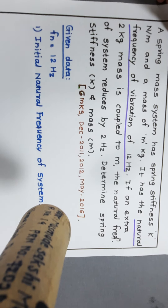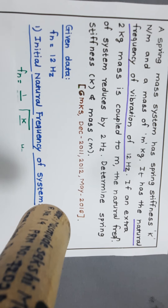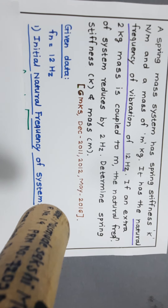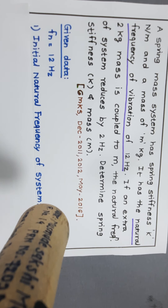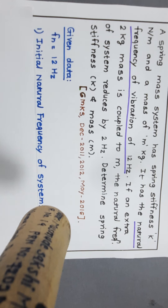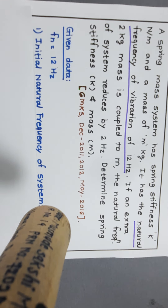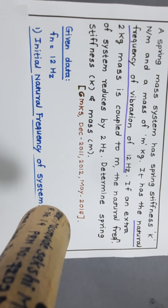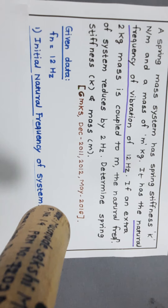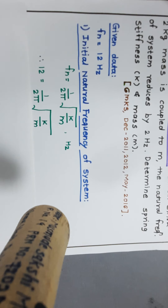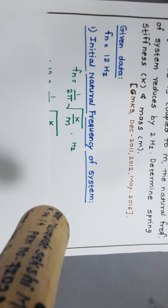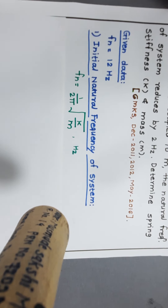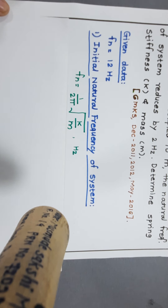This is the given data. The natural frequency is given as 12 Hz, and the reduced natural frequency will be 10 Hz when the 2 kg mass is coupled. For the first case, the initial natural frequency of the system is given by the formula: Fn = (1 / 2π) × √(k/m). This is the natural frequency formula we learned in the last lecture.